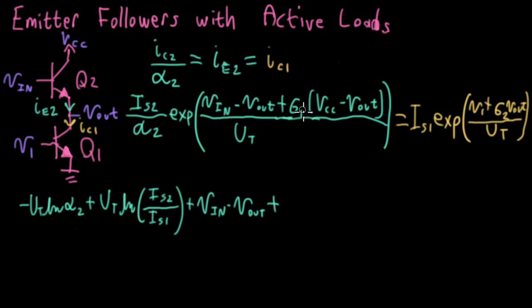And then I have this VN minus Vout plus - wait, this shouldn't be sigma1. This should be sigma2. And this one over here should be sigma1. If I was a more dedicated YouTube educator, I would go back and redo it starting from here. But I don't feel that dedicated. After all, how much are you paying for this? So I have sigma2 VCC minus Vout. And then on the right, I'll have V1 plus sigma1 Vout.